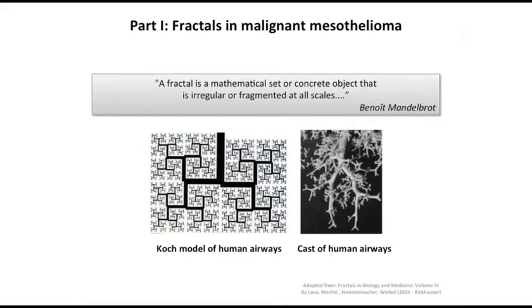Fractal was defined by Benoit Mandelbrot approximately 50 years ago — it's a mathematical set or concrete object that is irregular or fragmented at all scales. It's a self-iterative function, and what's shown here is a Koch model of human airways that can be predicted in terms of a complex plane, very similar to a cast of human airways.